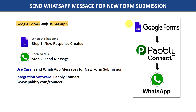You have two choices. The first choice is you can copy all the details of John from Google Forms, sort it out, compose a message, and send it manually on WhatsApp. The problem with this approach is it's very repetitive and tiresome. I suggest bringing in some automation so that when a new response is created in Google Forms, it will automatically send a message on WhatsApp.